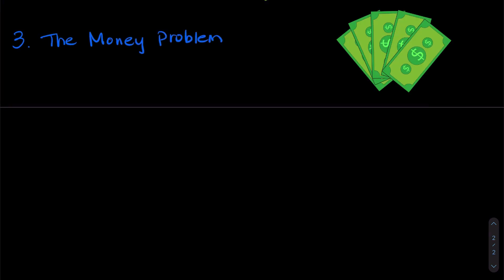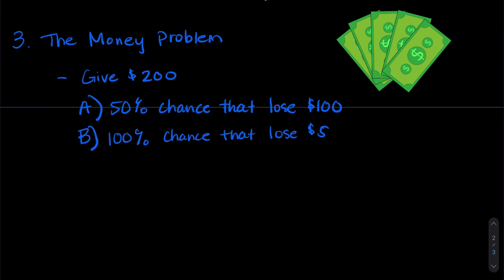And our last problem. I'm going to dub this one the money problem. It's not actually the name, but there are lots of versions of this. It's basically a loss aversion bias problem, which just means people don't like to lose money. In this case, I'm going to give you $200. With that $200, do you want to have a 50% chance that you lose $100 of it or have a 100% chance that you lose $50?